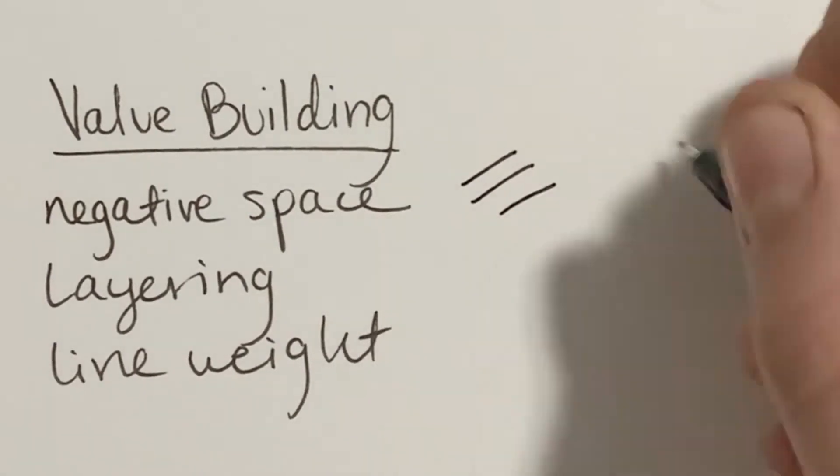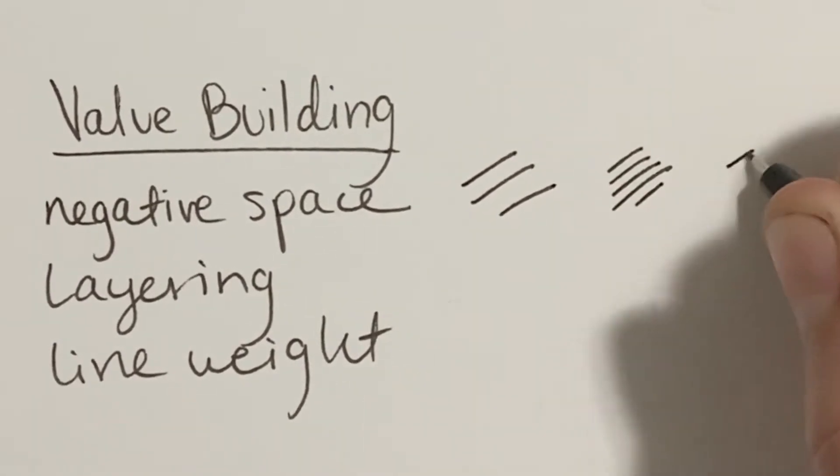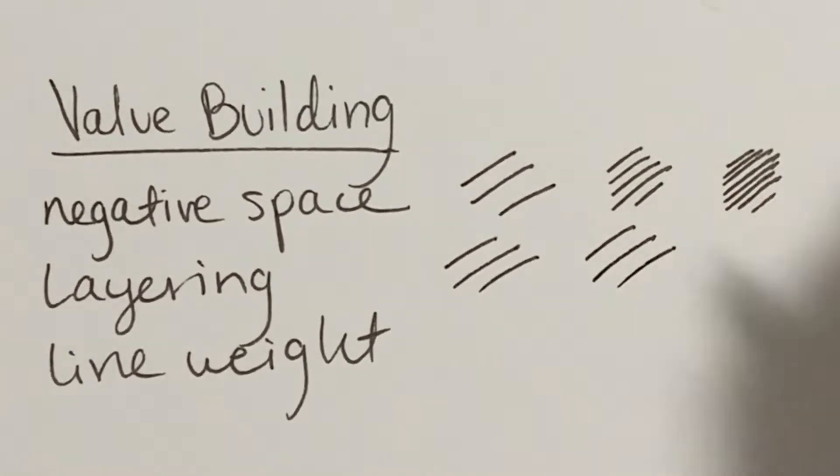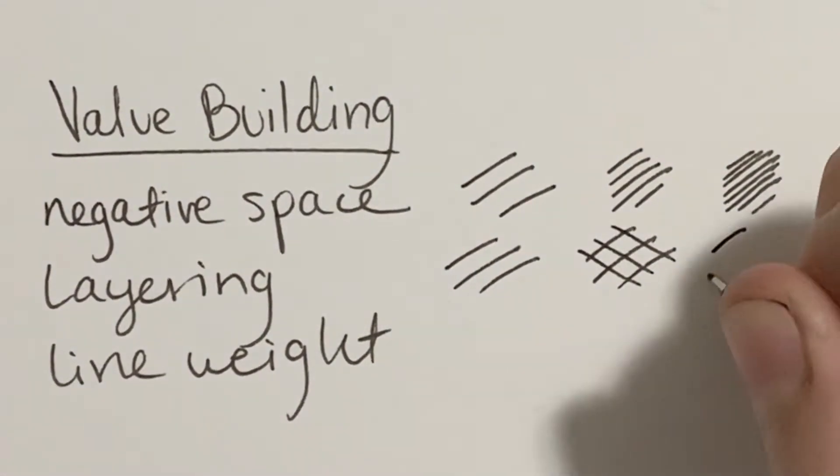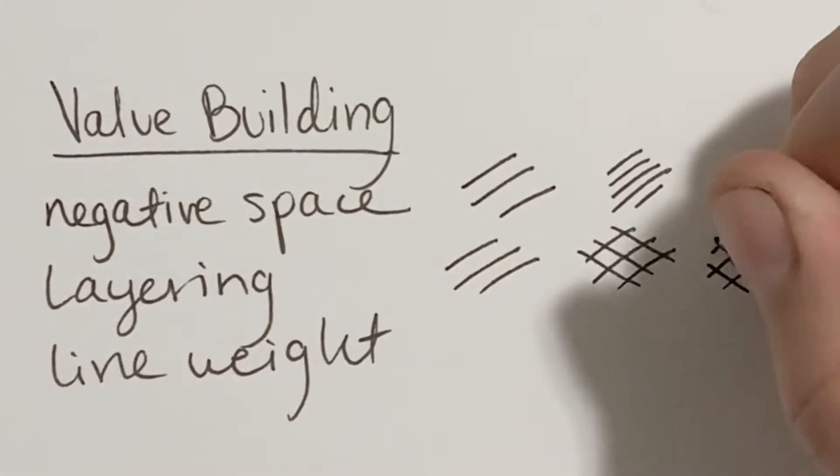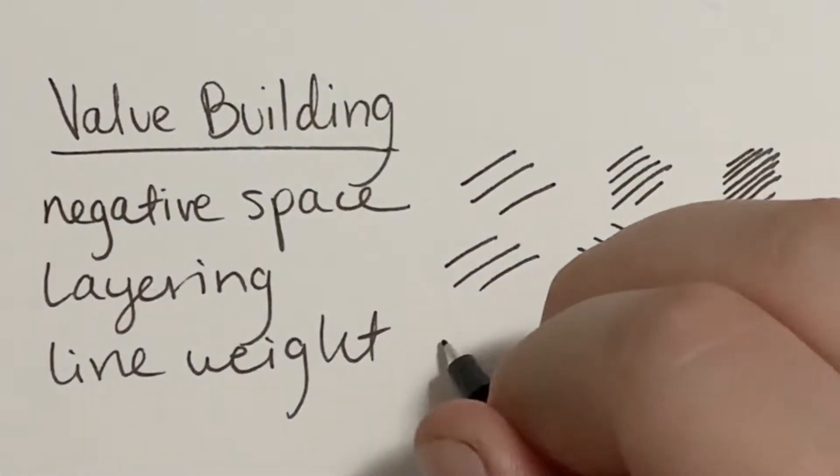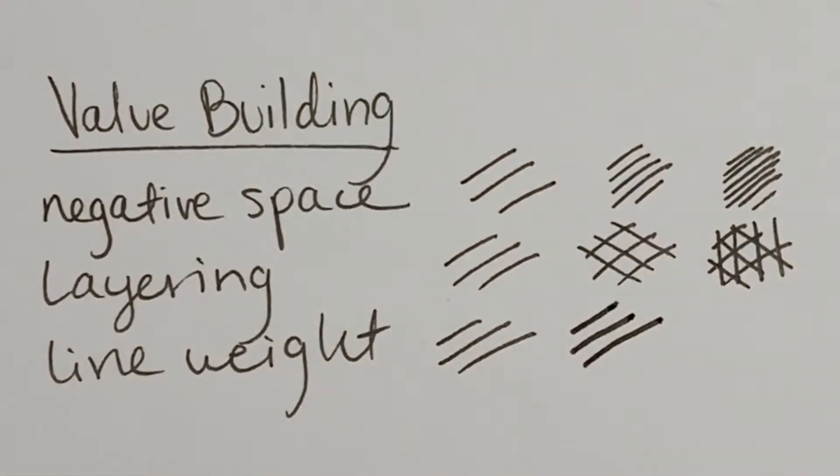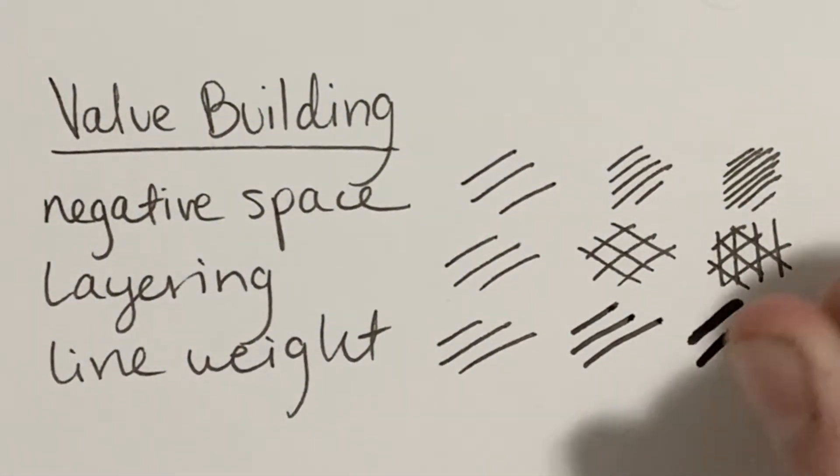That was a very brief introduction to the materials. This is a way to build value: negative space - the closer your lines are together the darker they're going to be. Layering - that's cross-hatching. You can do a bunch of different directions. Line weight is basically just switching different pens to get a thicker line.